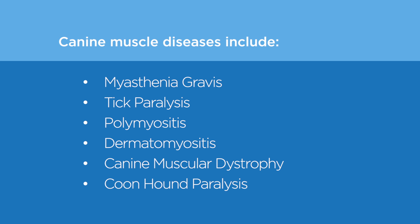Canine muscular dystrophy is a rarely seen genetic muscular disease. And finally, peripheral neuropathies — Coonhound paralysis is a good example of an inflammatory peripheral neuropathy.